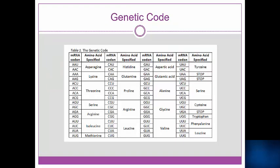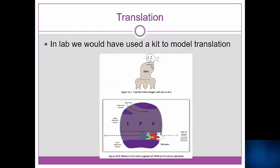This slide shows the genetic code, an ordered arrangement of all 64 possible mRNA codons and which amino acid each one corresponds to. Only the three stop codons do not correspond with amino acids. Note there is a genetic code table in your textbook and in your class manual in addition to the one shown here. In lab, we again would have used a kit to model translation, but we will do this using our slides for practice.